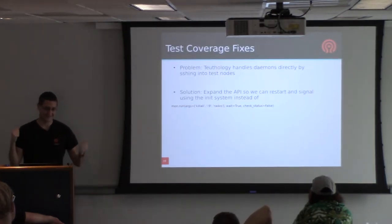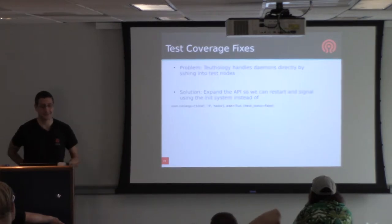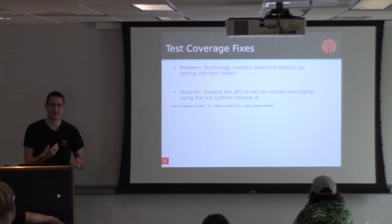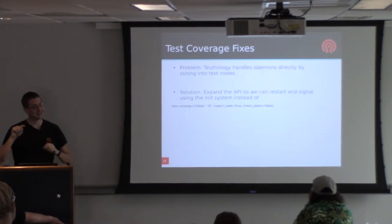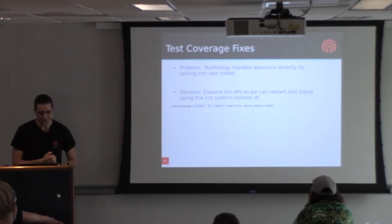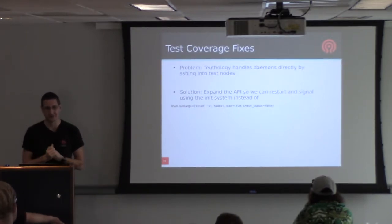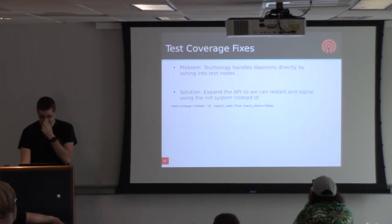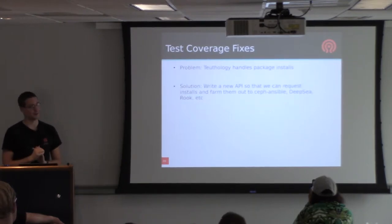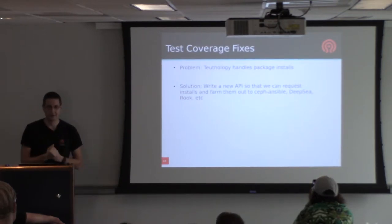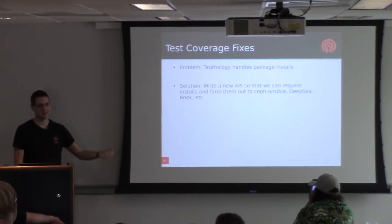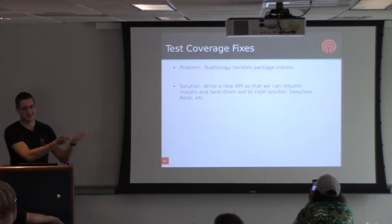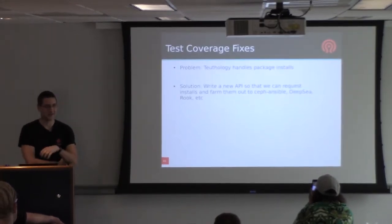Performance testing is very important - we're a distributed storage system. No one expects us to get 100% of every IOP but they do get angry if we degrade performance by 15% from release to release, and we really don't have any way to detect that in Teuthology right now. Scale testing is also not really feasible - Teuthology's integration testing system expects tests to finish within hours, and we always want to use as little space as possible. We're talking about expanding the Teuthology framework API so we can restart and signal using the init system, and writing a new API within the framework so installs can be satisfied by Ceph Ansible, Rook/Kubernetes, or DeepSea interchangeably.